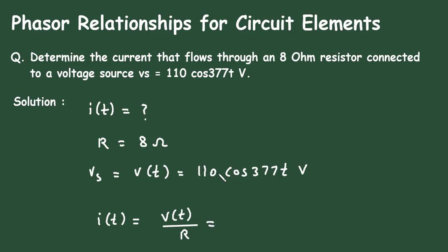So, here V of T is this value. Let us copy this from here directly. Divided by resistance value is 8.